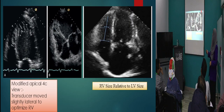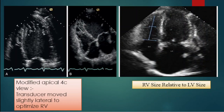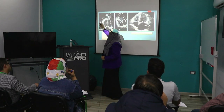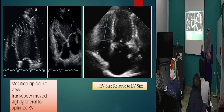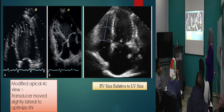This is the normal apical four-chamber view. You need to obtain this view. This is the modified apical four-chamber — you need to slide slightly lateral to look for the RV and see the free wall. When you get the modified apical four-chamber, you can see the free wall of the RV and assess any abnormalities. We will take this further when we assess pulmonary embolism.